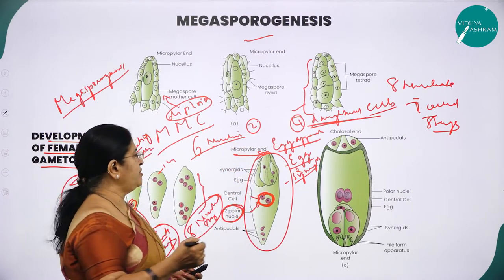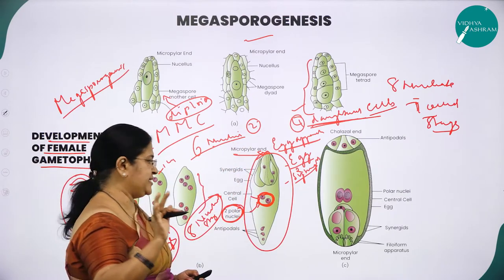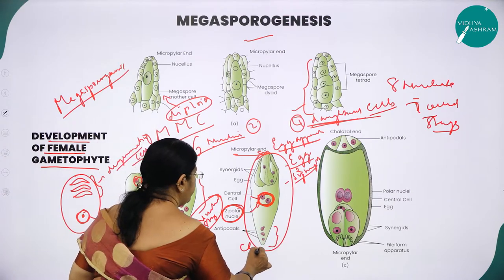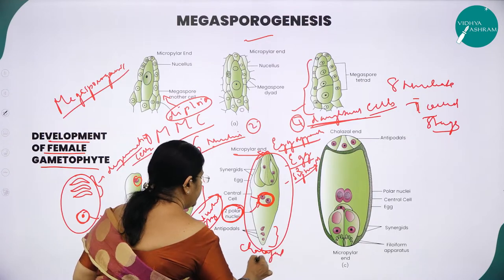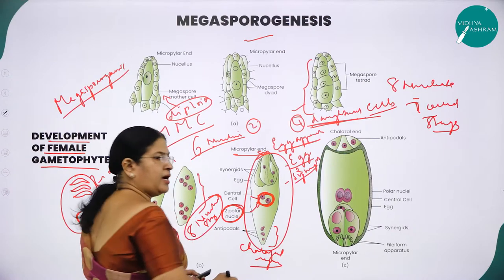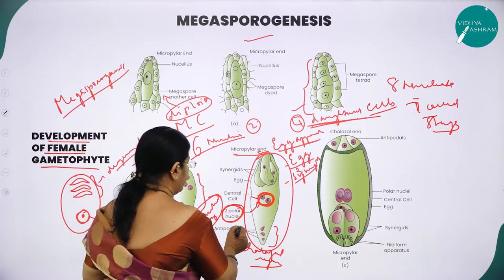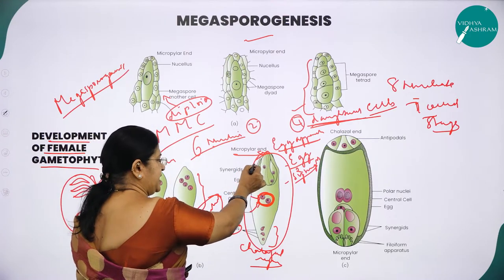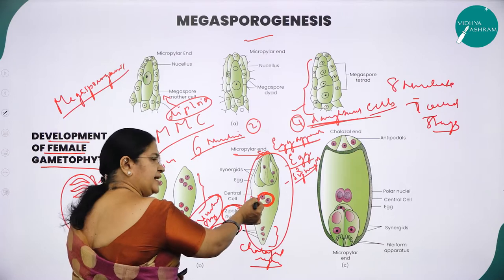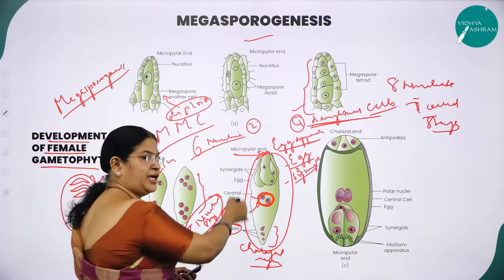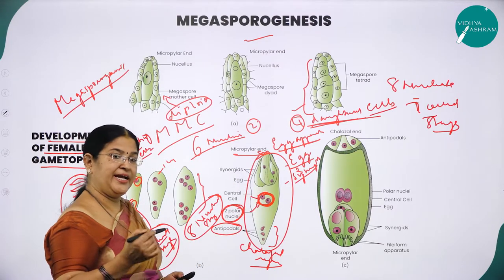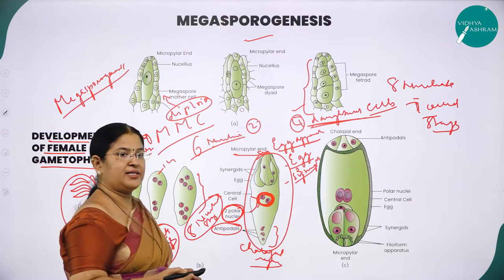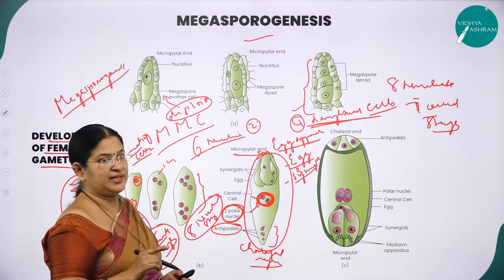Three cells are at the micropylar end (egg apparatus), three cells are at the chalazal end (antipodal cells), and two polar nuclei are at the center. So in total: 3 + 3 = 6 cells with cell walls, plus 2 polar nuclei — giving eight nuclei in seven cells. This is called the eight-nucleate, seven-cell stage.